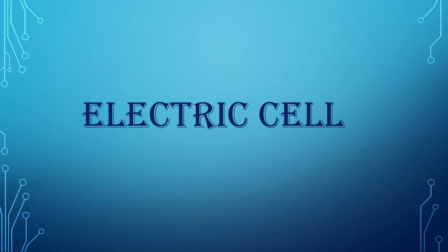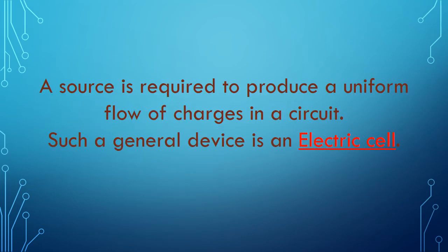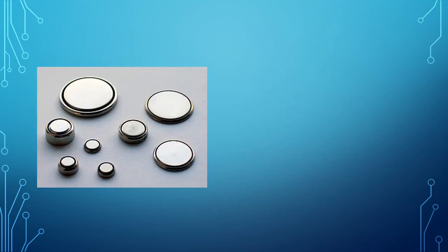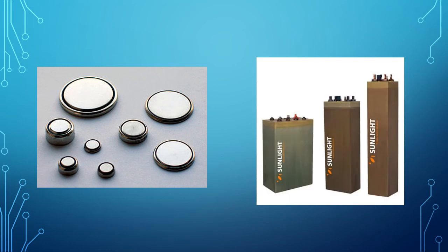Now let's learn something about electric cell. A source is required to produce a uniform flow of charges in a circuit. Such a general device is an electric cell. Various types of electric cells are available today. These are used in a range of machines from wrist watches to submarines.